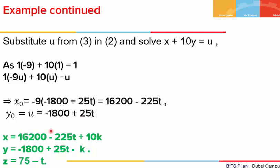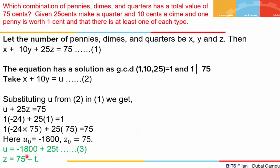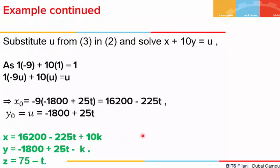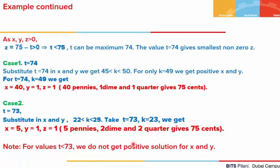The general solution is x = 16200 − 225t + 10k, y = (−1800 + 25t) − k, and z = 75 − t. We need x, y, z to be positive since we cannot have negative numbers of coins, and at least one of each is present, so we take x, y, z strictly greater than 0.